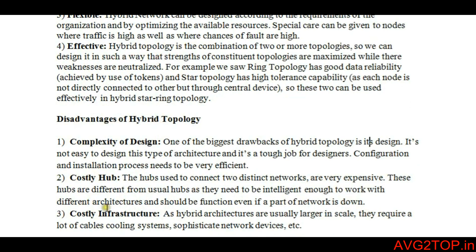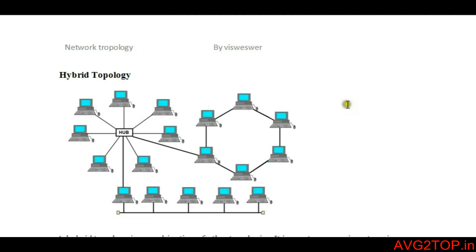The disadvantages of hybrid topology include complexity of design. Since hybrid is a combination of three different topologies — star, bus, and ring — it has three different complexities and three different characteristics. There is complexity in design and configuration, and installation has to be done more carefully and effectively. The hub used in this network also costs more compared to other topologies.